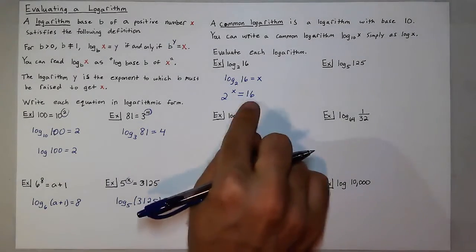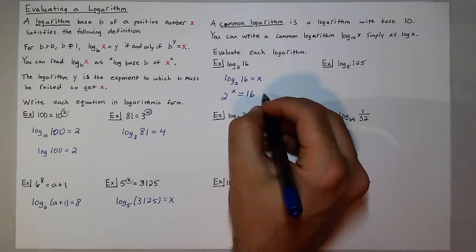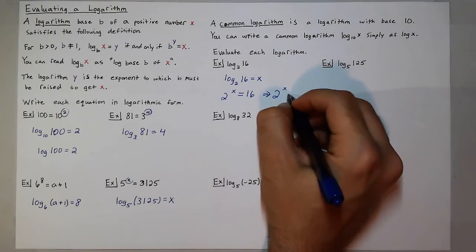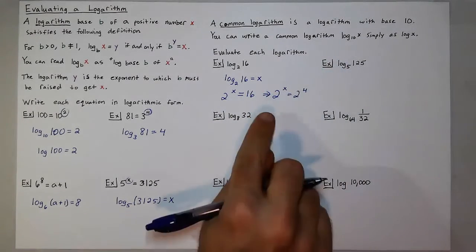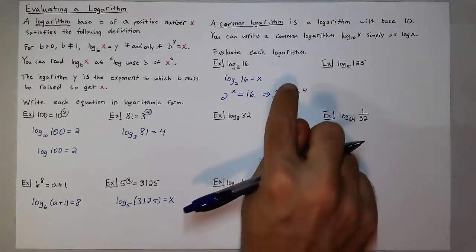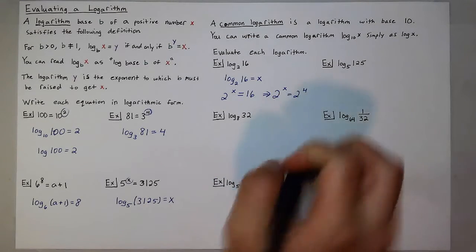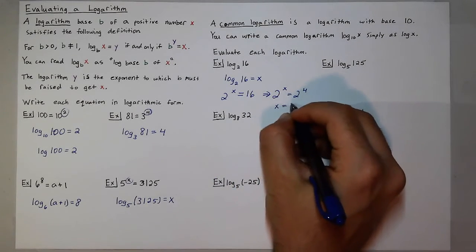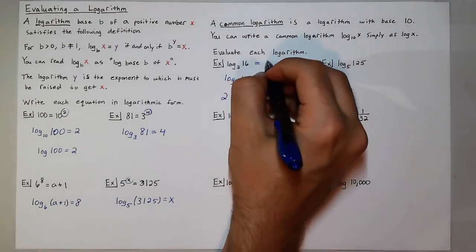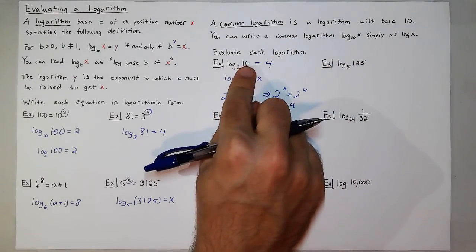So, in order to figure this out, I need to figure out what power do you raise 2 to to get 16? Well, you can raise 2 to the 4th power to get 16. So by this statement, x should equal 4. Since the bases match, the powers should be equal. So if we know that x is 4, that means that log base 2 of 16 should equal 4. So 4 is the exponent you raise 2 to to get 16.